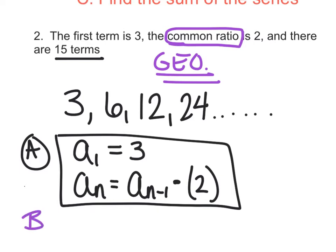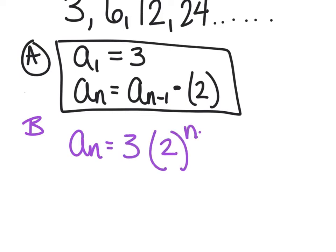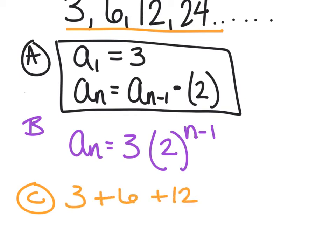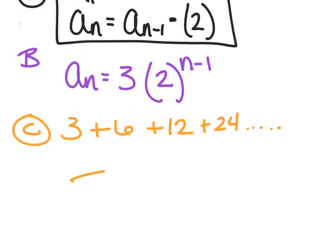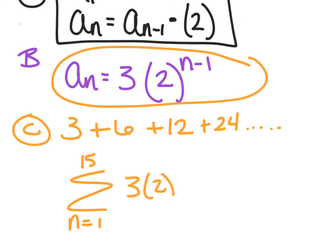Part B, the explicit formula: a sub n equals a sub 1, which is 3, times the common ratio to the n minus 1, so a sub n equals 3 times 2 to the n minus 1. For part C, the sum: instead of 3, 6, 12, it's 3 plus 6 plus 12 plus 24 all the way out to the 15th term. I'll write sigma notation from 1 to 15 of 3 times 2 to the n minus 1, and let the calculator do all that work.